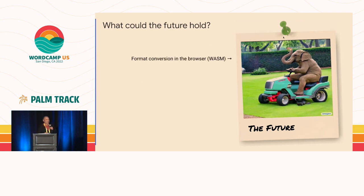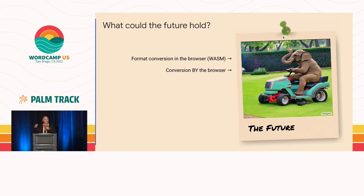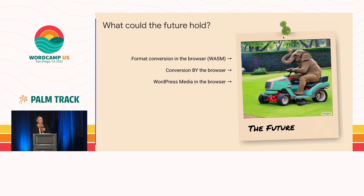What could the future hold? Maybe we could do format conversion in the browser with WebAssembly — you can actually run libraries like libavif that do AVIF conversion right in the browser. So maybe we don't have to wait for servers to catch up or for WordPress to start using PHP 8.1. Maybe when you upload an image, your browser could do the format conversion. Maybe the browser itself could build in these conversion tools — we have applications where you can save as, so why can't the browser convert images? And take that further: why not build WordPress media entirely in the browser, just like we rebuilt the editor in JavaScript? Why not use WASM for compression algorithms? Could WordPress itself serve as a CDN and generate images dynamically on the fly in the correct format based on the browser's request?